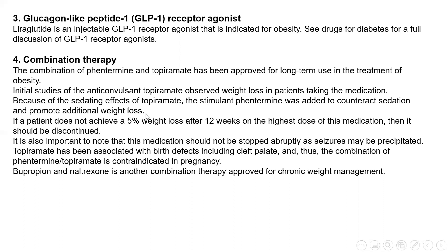Topiramate is combined with phentermine for two reasons: to increase the efficacy and to decrease the sedation that topiramate can cause. If there is no around five percent weight loss in about 12 weeks, it is important to discontinue this drug combination. Discontinuation should be done gradually, otherwise there is a risk of epileptic seizures. Additionally, topiramate causes birth defects, so the combination of phentermine and topiramate is contraindicated in pregnancy.